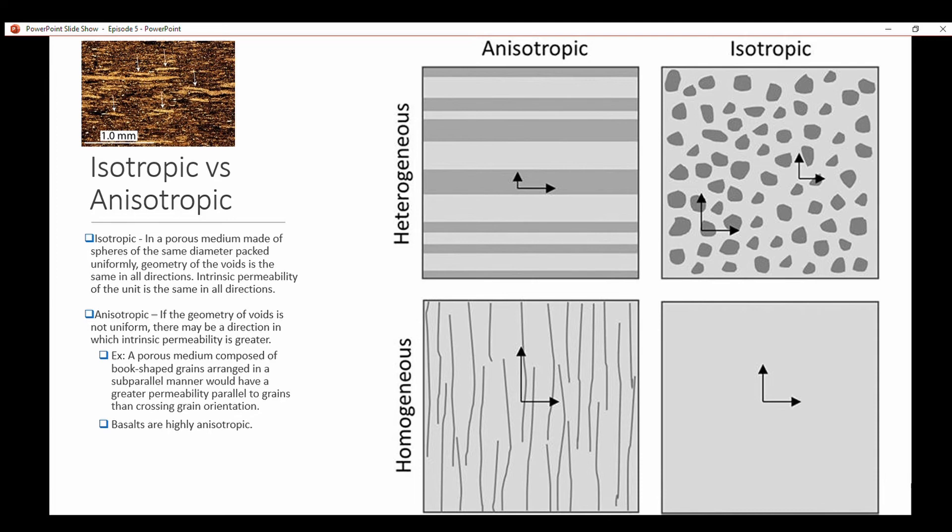Basalts are very highly anisotropic because you'll have different characteristics such as bubbles form and those gases trying to escape will form those bubbles and that won't occur throughout the entire basalt, it might occur in some areas. When the basalt cools you might have columnar basalts form, as it contracts it'll fracture, if it expands it'll fracture, it'll be very undulating.